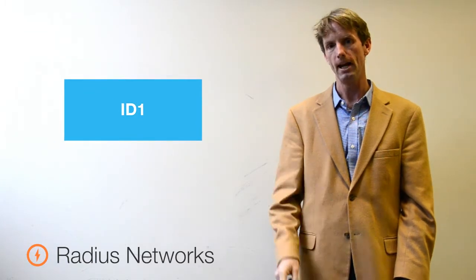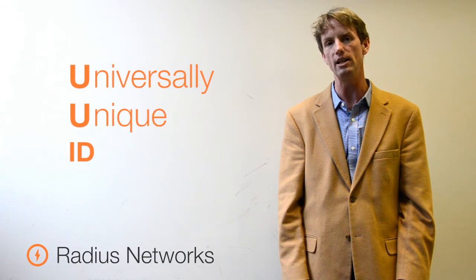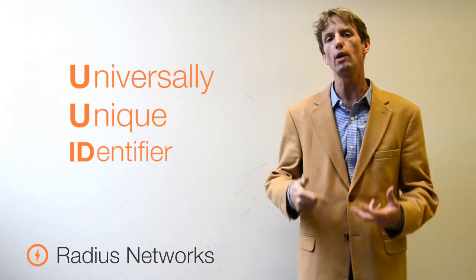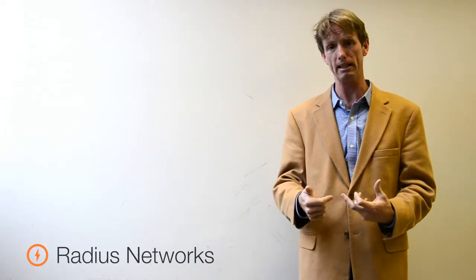The first one of these identifier fields is called ID1. It is a 16-byte field that is actually a UUID or Universal Unique Identifier. You generate one of these for your organization. Usually your same company is using the same one for everything.